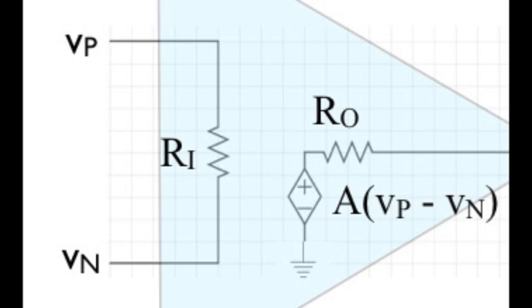But its element constraint is that the voltage across me depends on the difference between two node voltages in the circuit. Specifically, here it is a constant A times the difference between node voltages v sub p and v sub n.